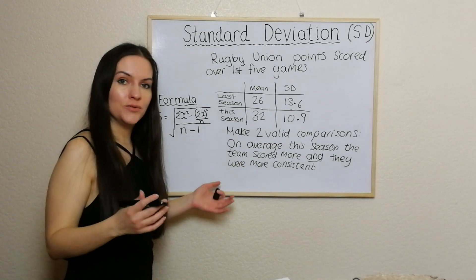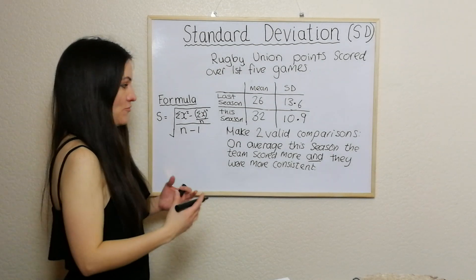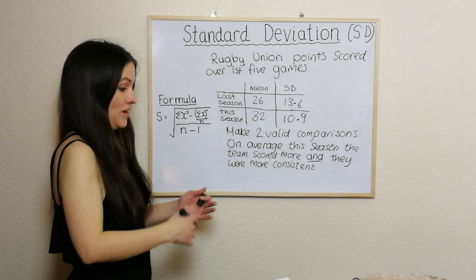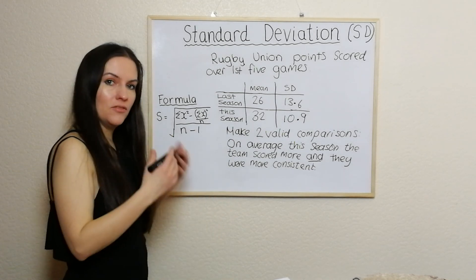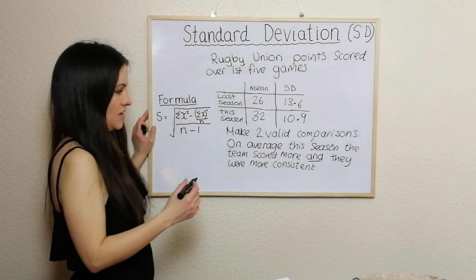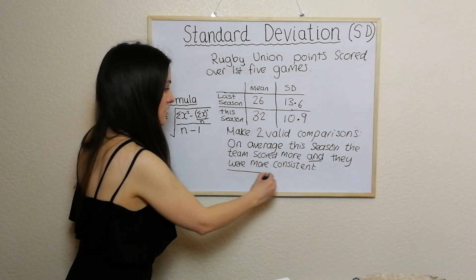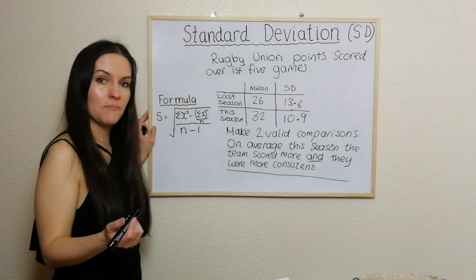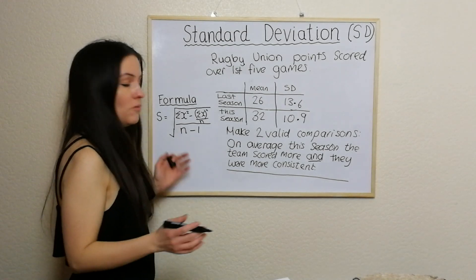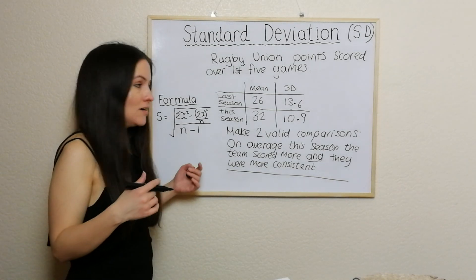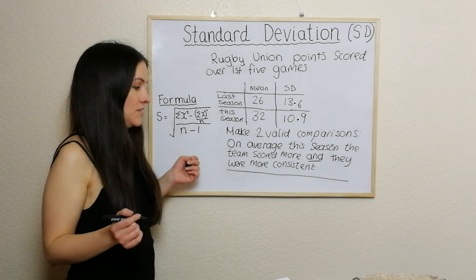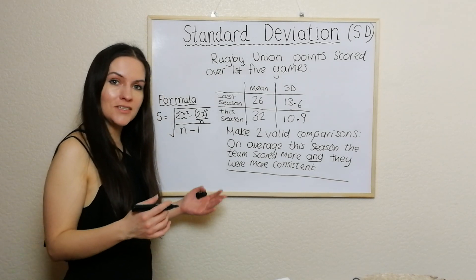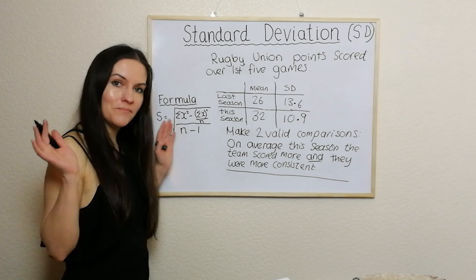This is the ideal situation — on average doing better and being more consistent. Quite often in questions you might have one doing better but with less consistency. Basically this comparison answer will get you two marks in the National 5 exam. I hope this has been helpful. My name's Arleigh, TutorLean. Please like, please subscribe, and please suggest more maths videos you'd like to see on this channel. Thanks again. Bye.